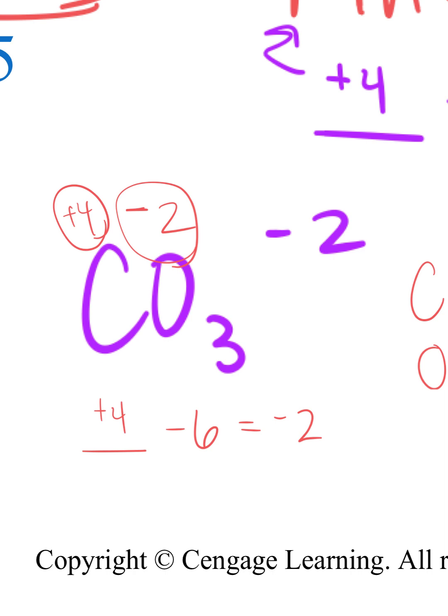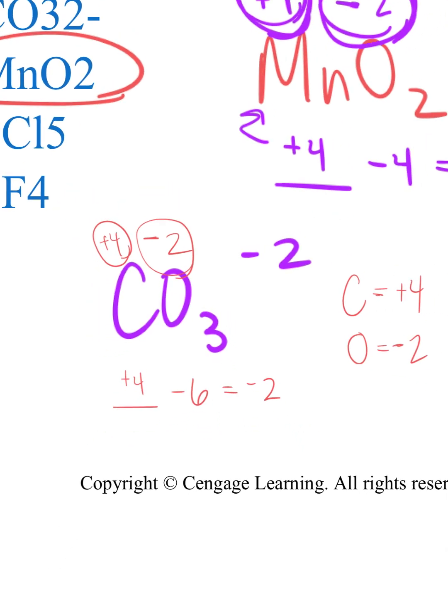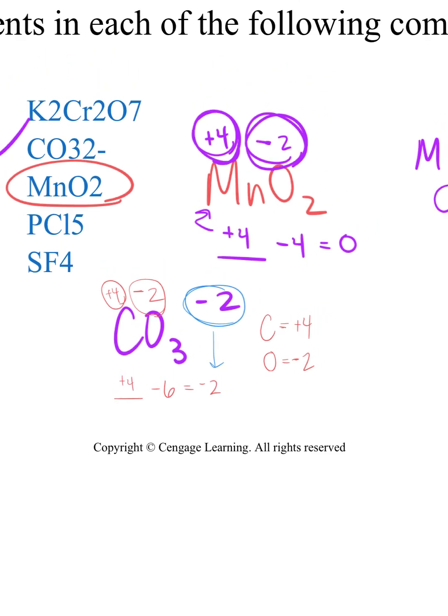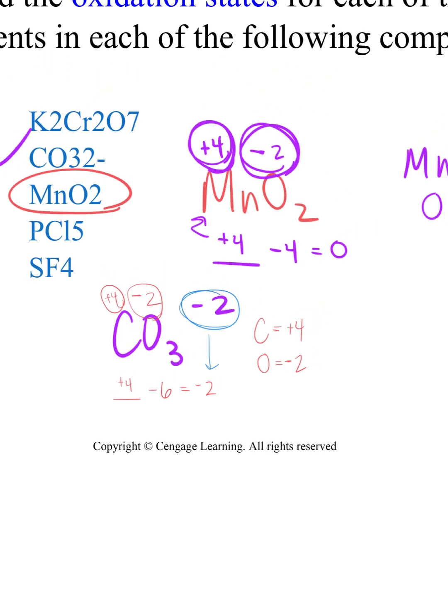For some reason with oxidation numbers, they do want to see that plus sign. So if it's positive, we need to make sure and include that plus. Not just assume a plus. We're going to go ahead and write that in there. Does that make sense? This one had a charge, which is why our workspace needed to add up to that charge. Easy peasy.